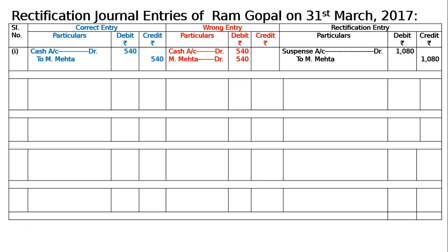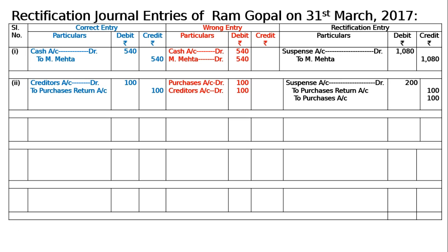The second entry: Rs. 100 purchases return was posted to the debit side of purchases account. The correct entry is creditors account debited to purchases return account, Rs. 100. It was by mistake entered in the purchases account — creditors account debited and purchases account debited. There is no mistake in creditors account. Hence, purchases account has to go by crediting that, and purchases return has to come in the credit. Hence, suspense account debited 200 to purchases return account 100 and to purchases account 100.